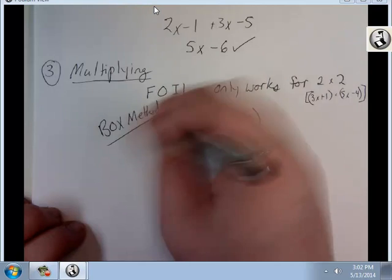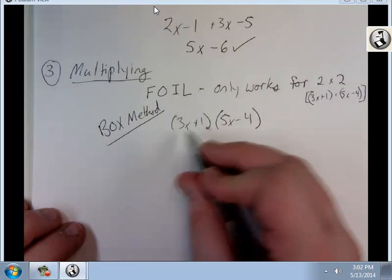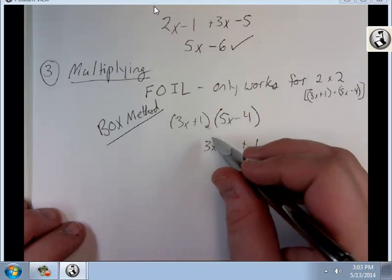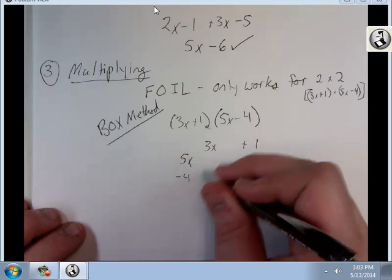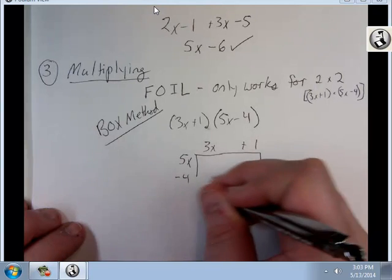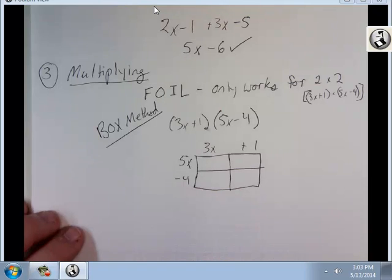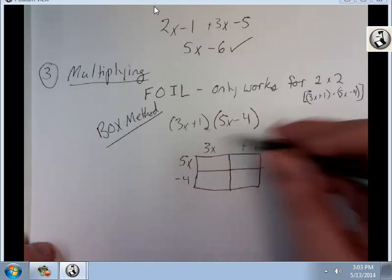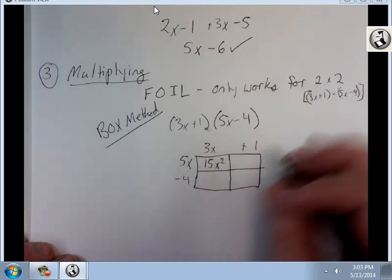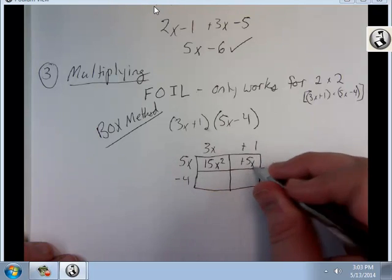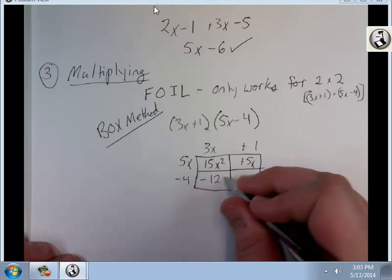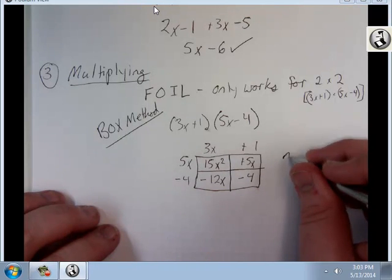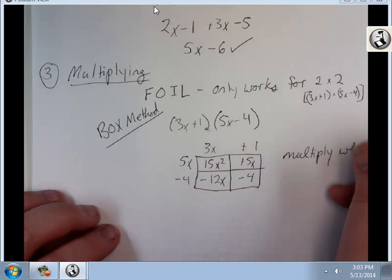I'm going to show you something called the box method. I'm going to take my first polynomial and write it like this: 3x, leave a big space, plus 1. I'm going to take my second one and write it vertically: 5x minus 4. I'm going to draw a box in here. Wherever they cross is where you multiply. 3x times 5x gives me 15x squared. 1 times 5x gives me plus 5x. Leave your signs. 3x times minus 4 is minus 12x. 1 times negative 4 is minus 4. Alright, so multiply where they cross.